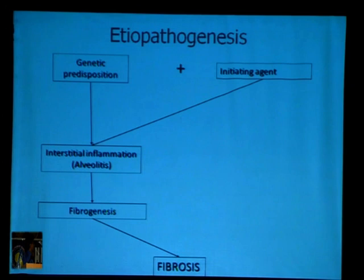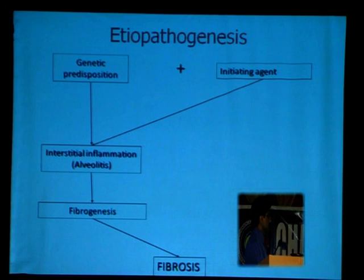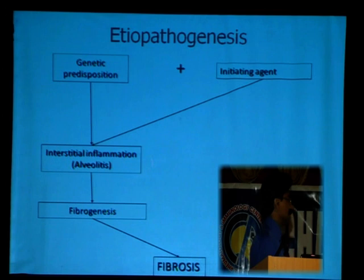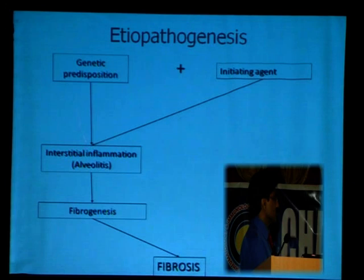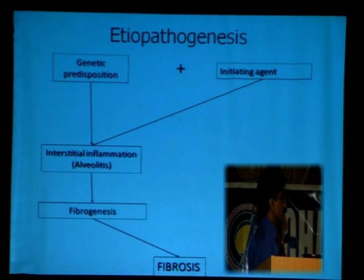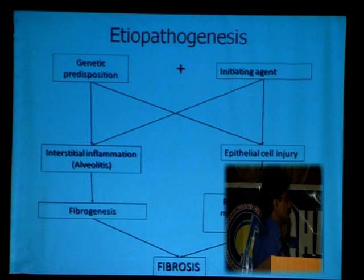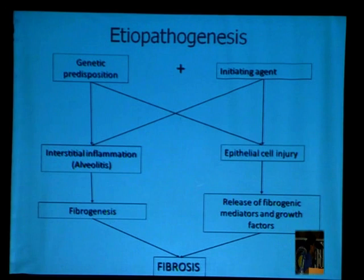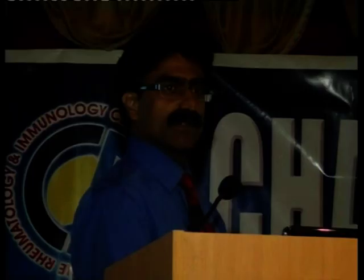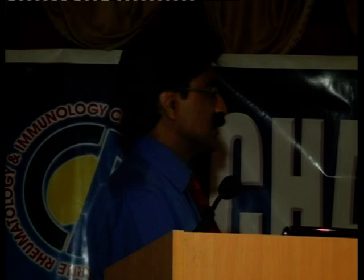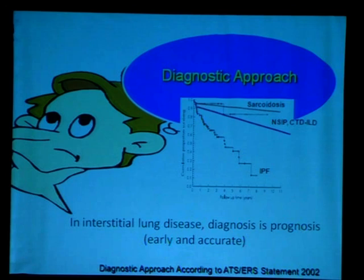The etiopathogenesis of ILD remains controversial. There is a genetic predisposition, and an inciting agent results in inflammation in the interstitium, followed by fibrogenesis and fibrosis — the usual inflammatory pathway. A second pathway involves the inciting agent causing epithelial injury in genetically predisposed individuals, with release of fibrogenic mediators and growth factors, resulting in dysregulated wound healing and fibrosis without prominent inflammation. This is still an area of active research.